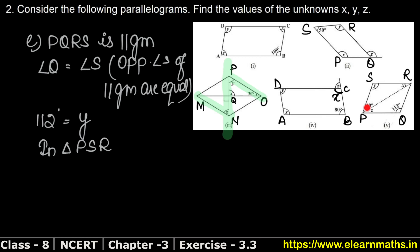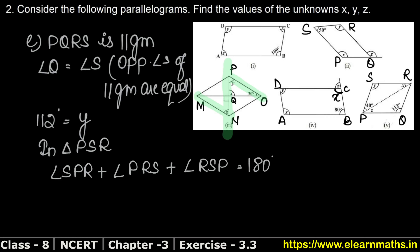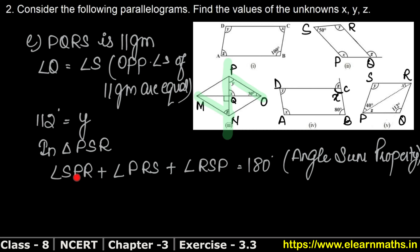In triangle PSR: angle PSR plus angle PRS plus angle RSP equals 180 degrees, because of the angle sum property of triangles. Now angle at P is 40 degrees — just the part of angle P inside the triangle.